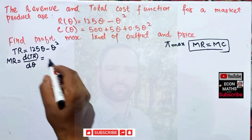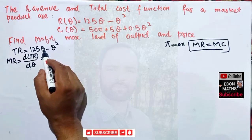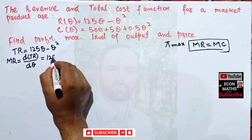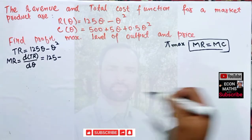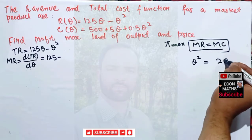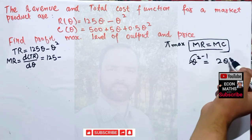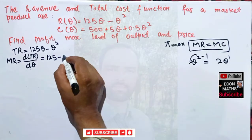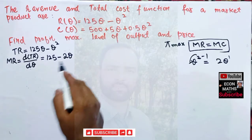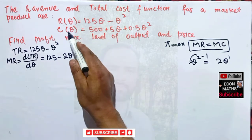Differentiating 125Q gives 125, since the derivative of Q is 1. For the Q squared term, applying the power rule gives 2Q. Therefore, marginal revenue MR = 125 minus 2Q.